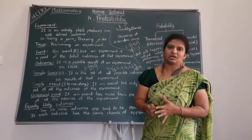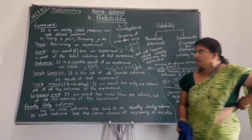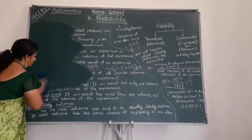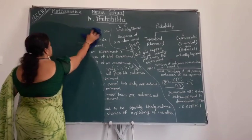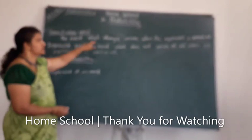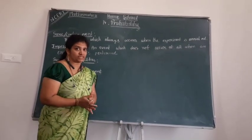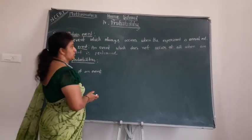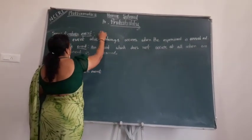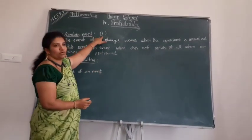We still have three or four more concepts. The first is the sure or certain event: the event which always occurs when the experiment is carried out. We may call it a possible event, sure event, or certain event. This event's probability value is 1 — the event definitely will occur, so we say its value is 1.